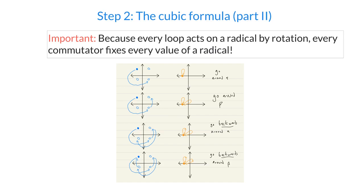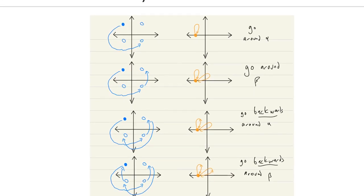This type of special path is called a commutator. Starting with two loops alpha and beta, the commutator is: go around alpha once, then beta once, then backwards around alpha, then backwards around beta. Every loop like this always fixes the values of a radical, because loops act on radicals by rotation. If alpha rotates by some amount n and beta rotates by some amount m, then going alpha, beta, alpha-inverse, beta-inverse means forward by n, forward by m, back by n, back by m — you end up where you started. So commutators fix all radical values.